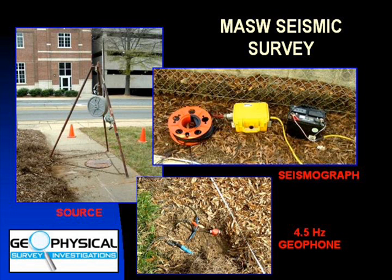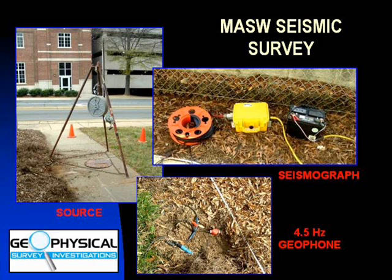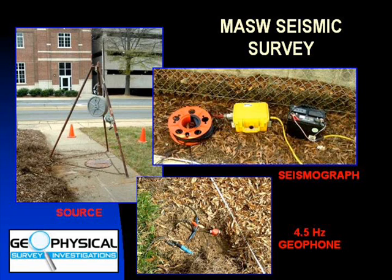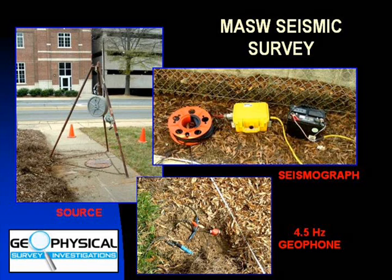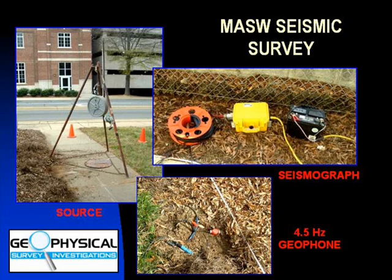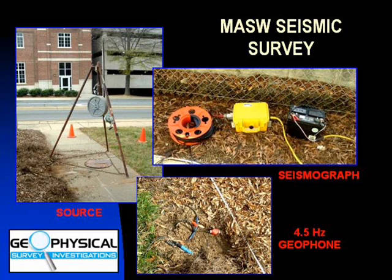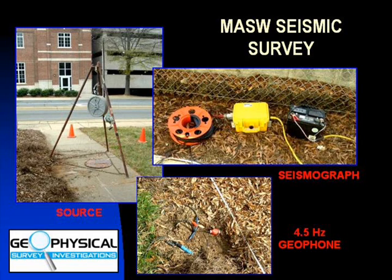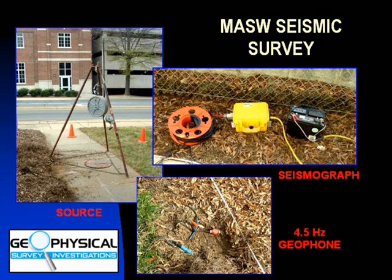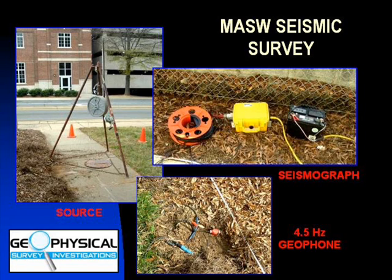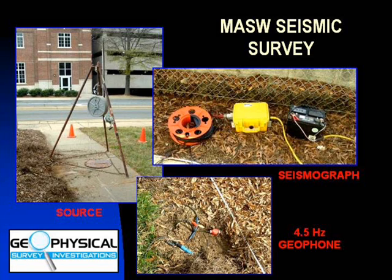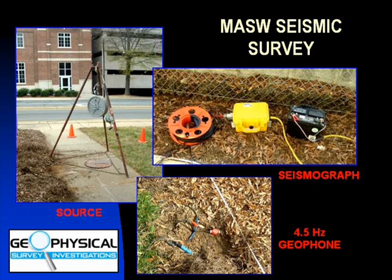The MASW survey converts surface seismic waves into approximate shear wave velocities. The shear wave velocities can then be used to determine the IBC site classification. A weight drop is used as a source to generate the surface waves, and a spread of geophones and a seismic graph record the surface wave velocities.